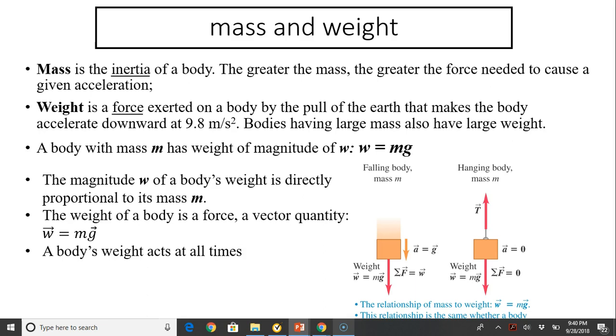The weight of the body is a force, a vector quantity. The directional force is the same as g, the acceleration, which is downward at 9.8 meters per second squared. That's why weight is always going downward.